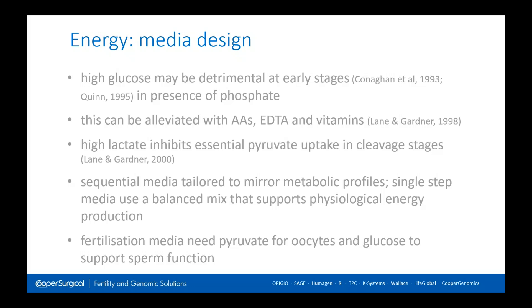For fertilisation, we need pyruvate for the oocyte, but sperm don't really metabolise pyruvate — it's only found in seminal plasma as a precursor of lactate. So you need glucose to support sperm function when we're considering fertilisation.